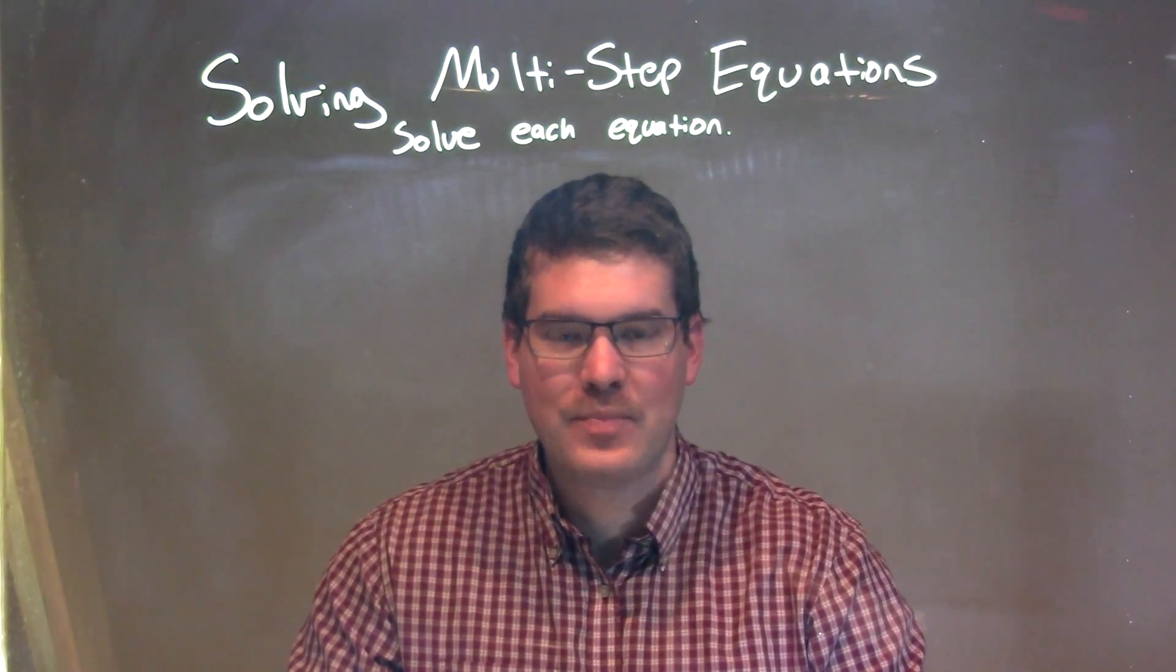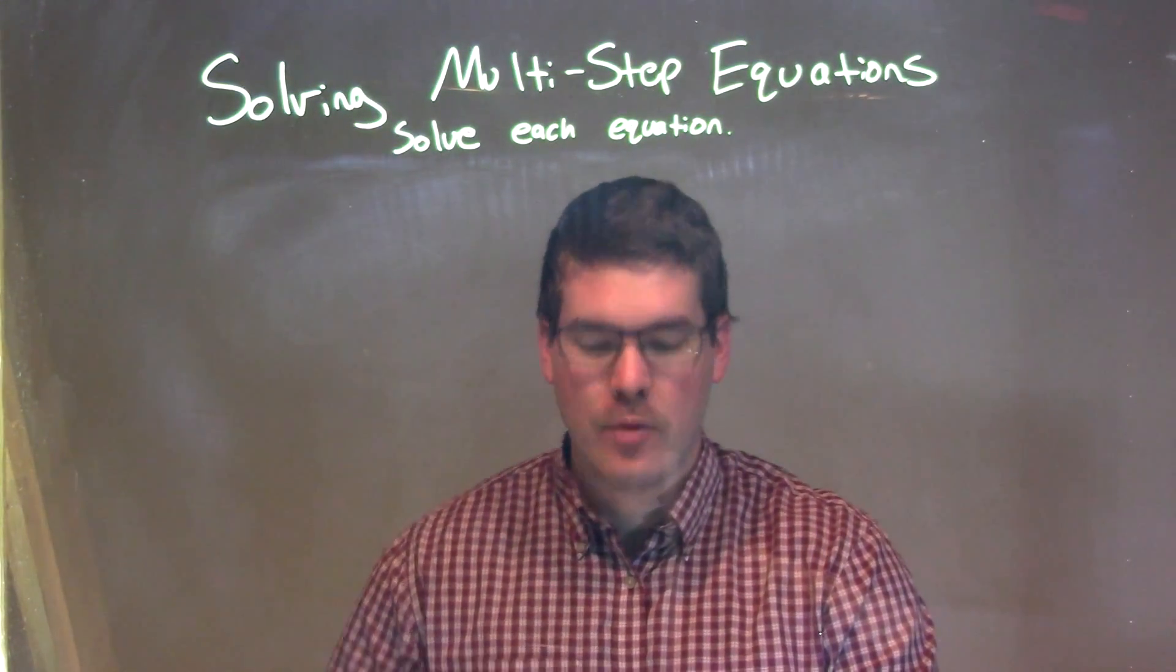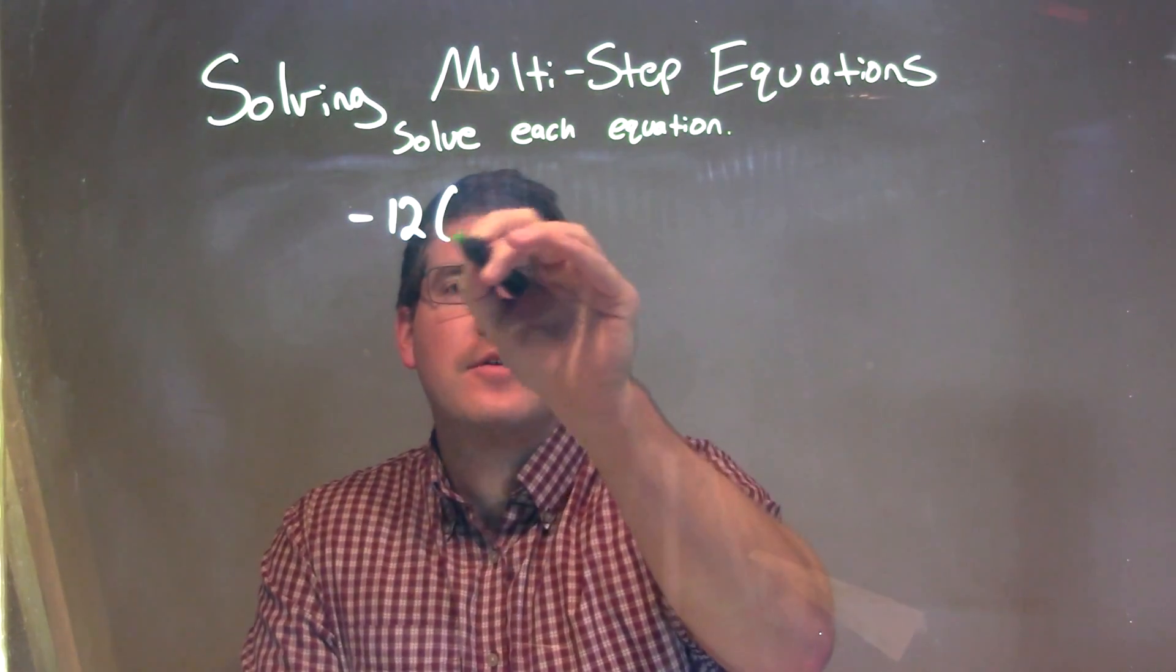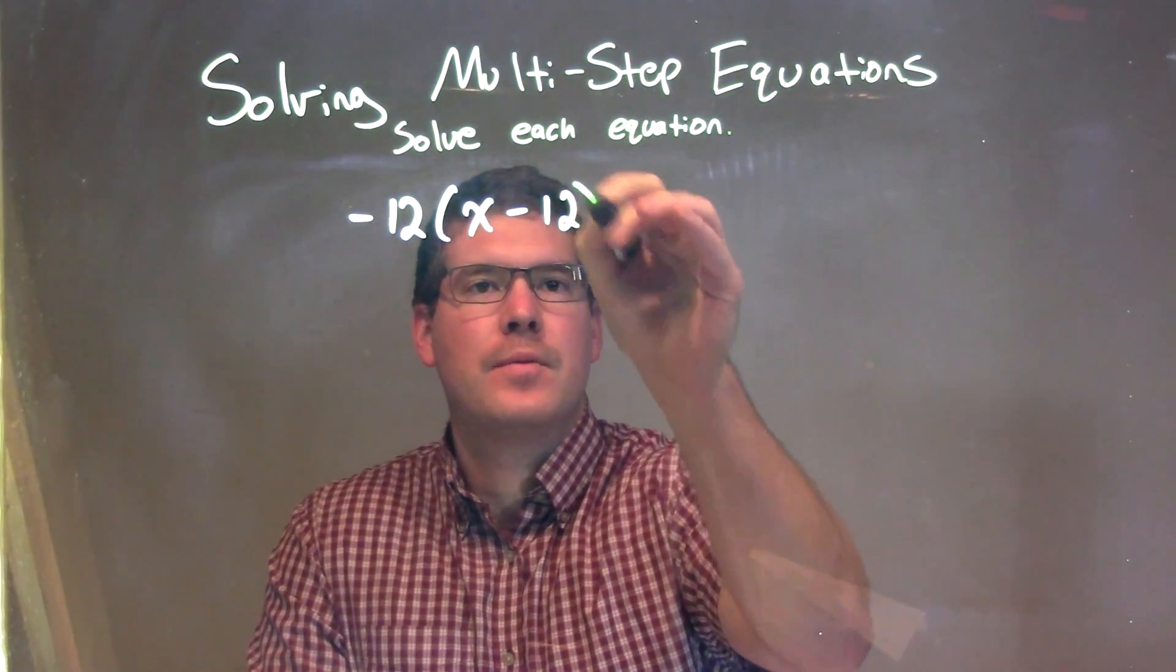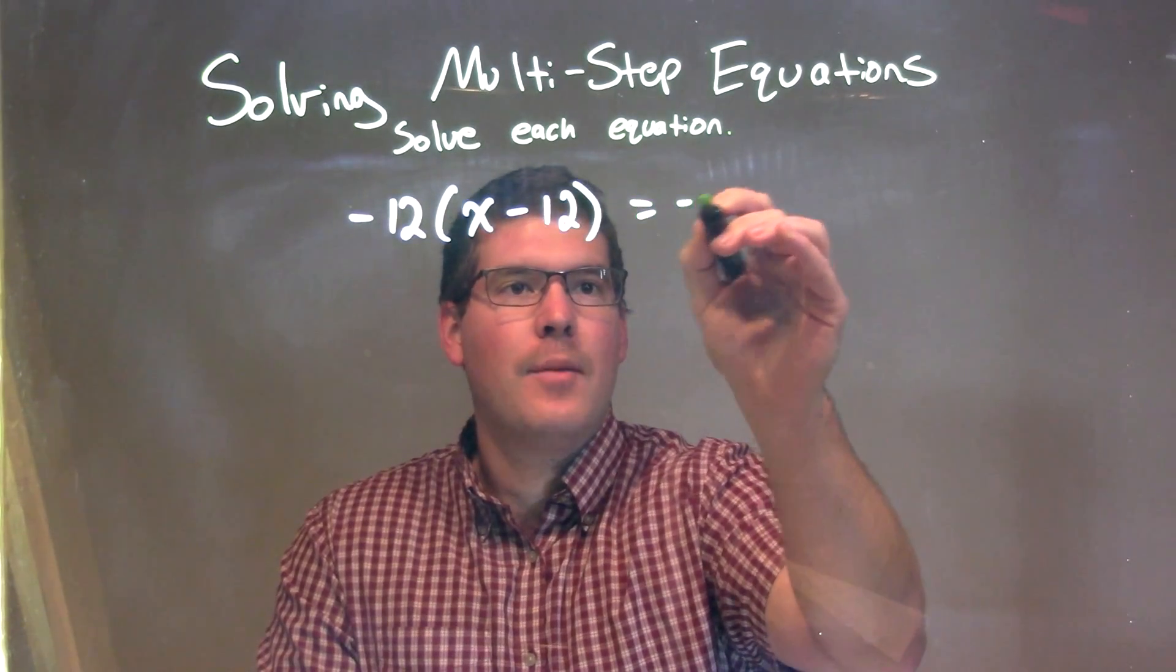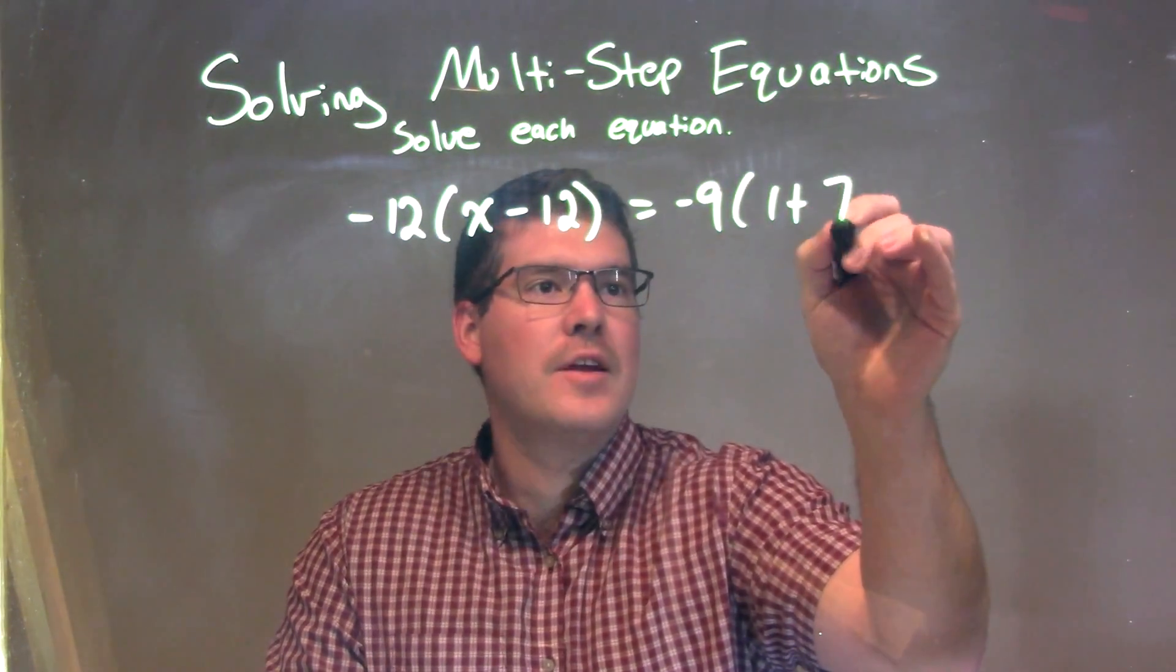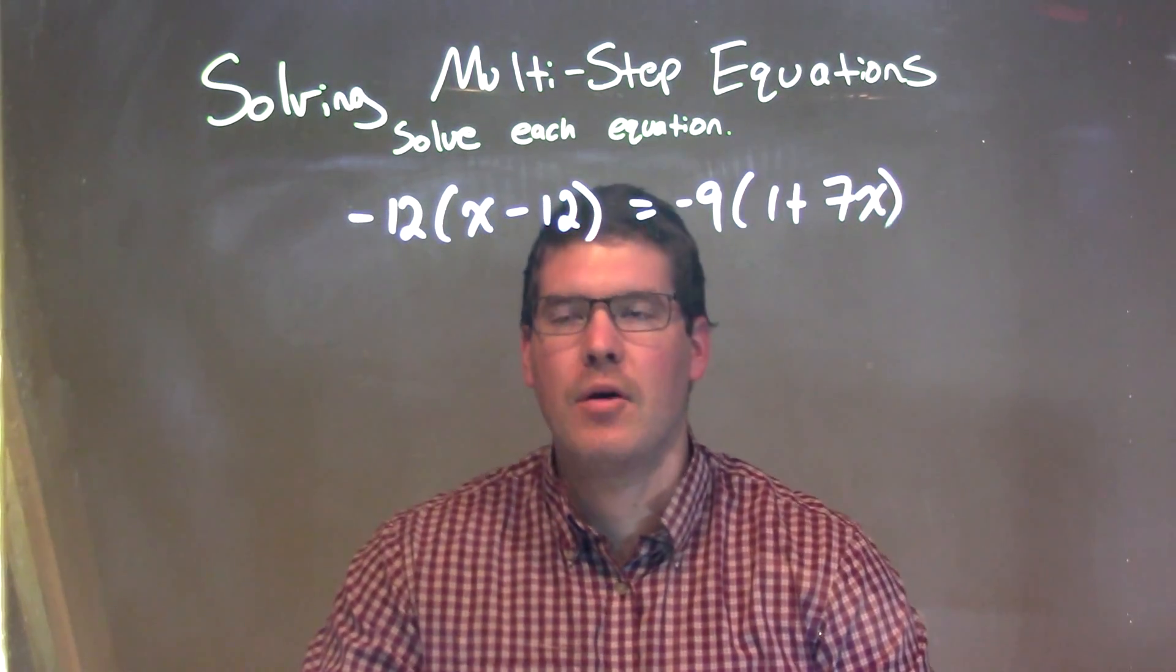I'm going to solve each equation. If I was given this equation, negative 12 times x minus 12 equals negative 9 times 1 plus 7x. Alright.